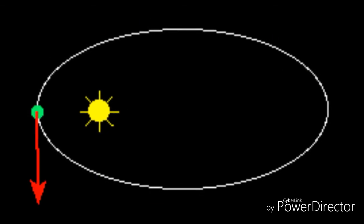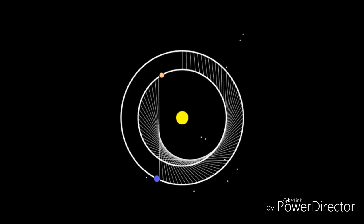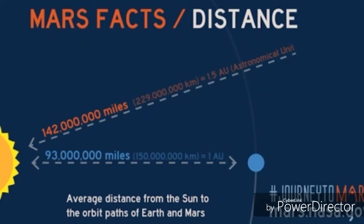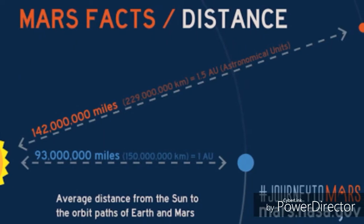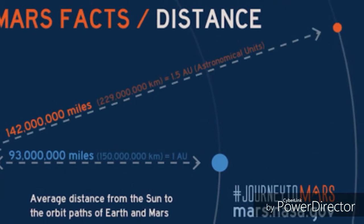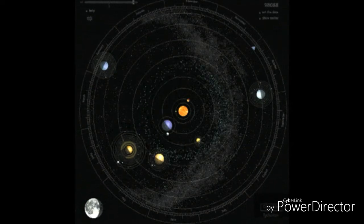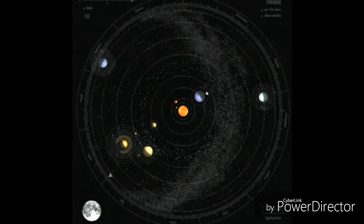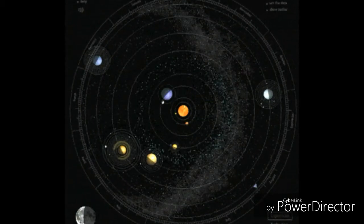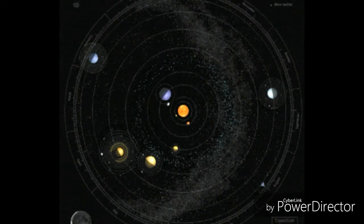A planet's orbital speed changes depending on how far it is from the sun. The closer a planet is to the sun, the stronger the sun's gravitational pull on it and the faster the planet moves. The farther it is from the sun, the weaker the sun's gravitational pull and the slower it moves in its orbit. A planet farther from the sun not only has a longer path than a closer planet, but it also travels slower since the sun's gravitational pull on it is weaker. Therefore, the larger the planet's orbit, the longer a planet takes to complete it.